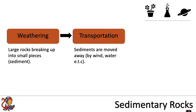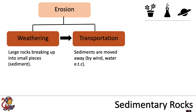Then the sediment — the small pieces of rocks — are moved away from where they were broken down. This could be by wind or water, for example, and this process is called transportation. Together, these two processes — weathering and transportation — we would describe as erosion.